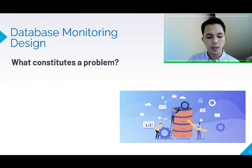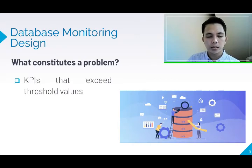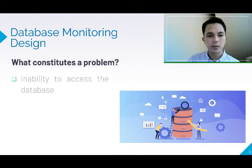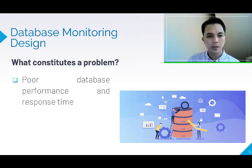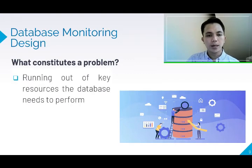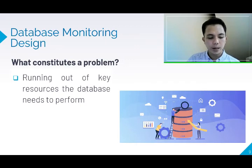What constitutes a problem? 1. Key performance indicators that exceed threshold values. 2. Alarms or alerts generated by the database. 3. The inability to access the database. 4. Poor database performance and response time. And running out of key resources the database needs to perform properly, like CPU, memory, storage, and input-output capacity.